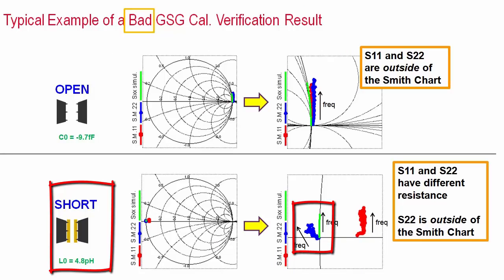The re-measured short cal kit standards also exhibit problems. The port 2 resistance in blue is different from port 1 in red and even negative. Also the port inductances are different. At port 1 it's 20% too big and at port 2 it's 50% too small compared to the cal kit definition of 4.8 picohenry. The calibration therefore is bad and has to be repeated.